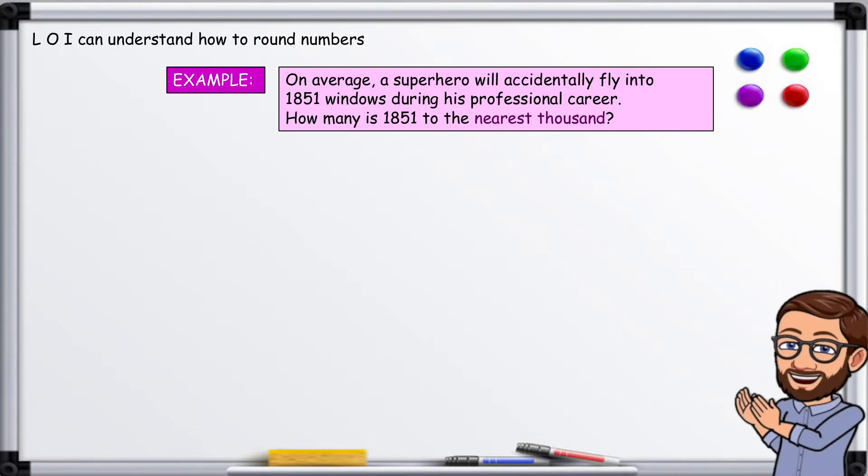Example. On average, a superhero will accidentally fly into 1851 windows during his professional career. How many is 1851 to the nearest thousand?